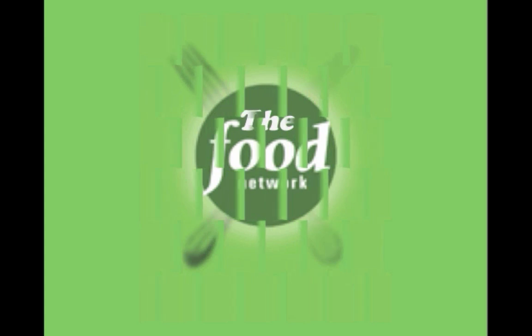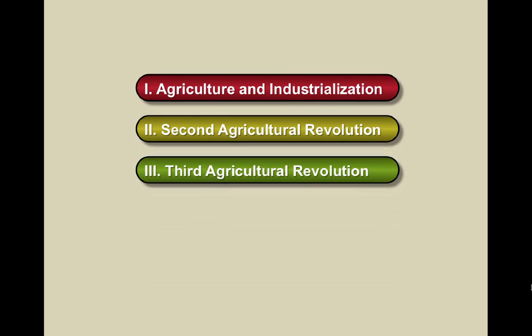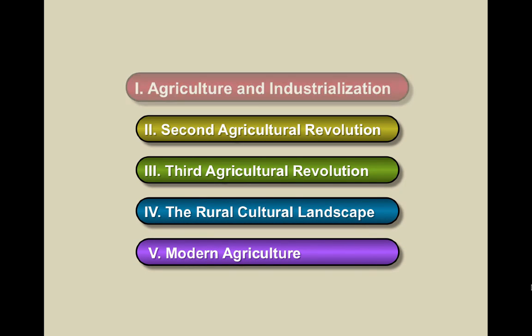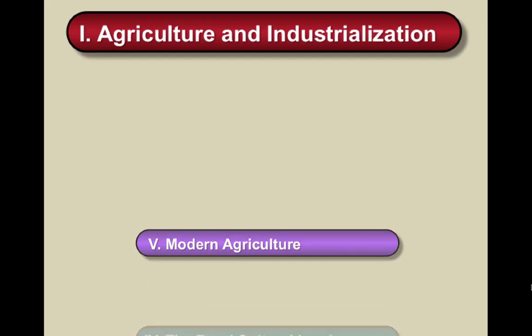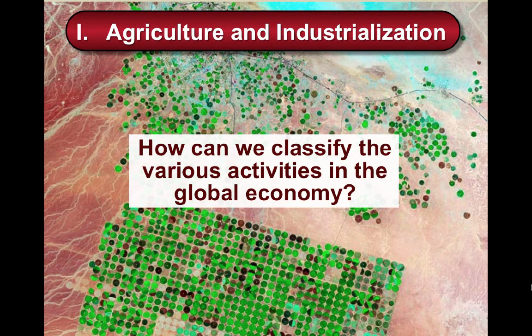Let's begin our look into how this food network was all made possible. In this video we're going to take a closer look at agriculture and industrialization. And in doing so, we'll ask this essential question: how can we classify the various activities in the global economy?